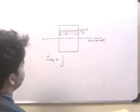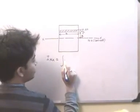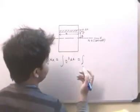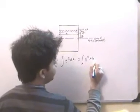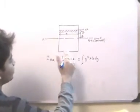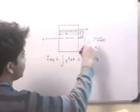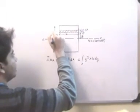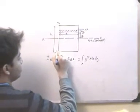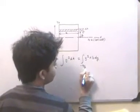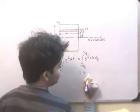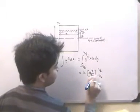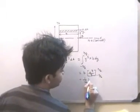We know that IXX is equal to the integral of Y squared dA, which can be written as the integral of Y squared into B dY. To get the moment of inertia of this whole rectangular section with respect to the X axis, we put limits. If the height is H, then this goes from minus H by 2 to H by 2. So we have B·Y cubed by 3, evaluated from minus H by 2 to H by 2.